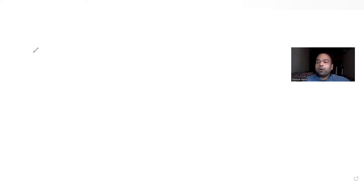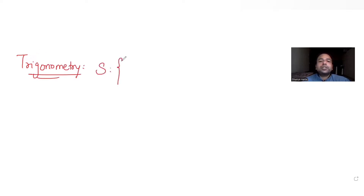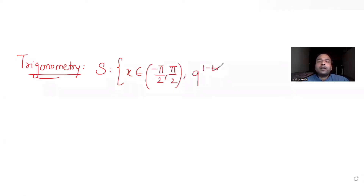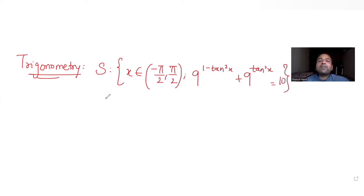Today's question is from the topic of trigonometry. Set S consists of values of x belonging to [-π/2, π/2], and the equation given is 9 raised to (1 - tan²x) plus 9 raised to tan²x is equal to 10.